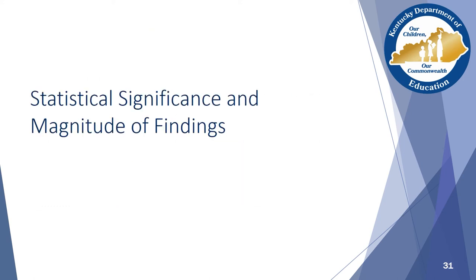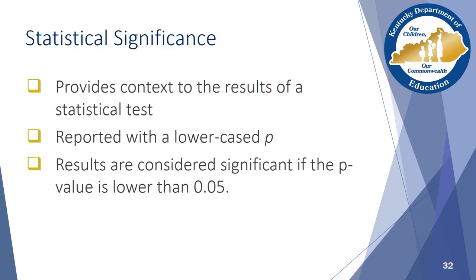Inferential statistics help researchers draw conclusions about a set of data. They typically build off of the descriptive statistics discussed in the previous section and provide greater insight into a population. So far, we have simply discussed inputs and outputs, but now let's talk about how we know what those numbers mean. The results of a statistical test is simply a number until we give it some context. That is where measures of statistical significance come into play.